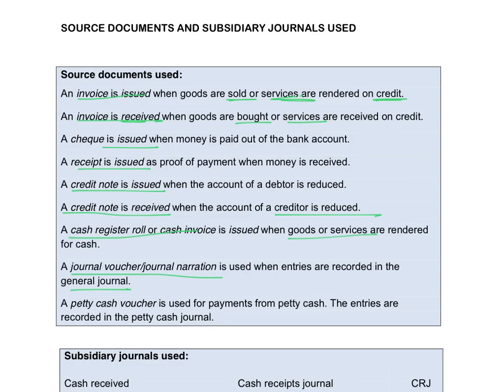Petty cash vouchers are used for payments out of the petty cash — the tin where you put money when you pay out small amounts. Those payments will be recorded in the petty cash journal.